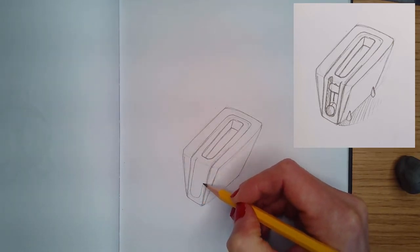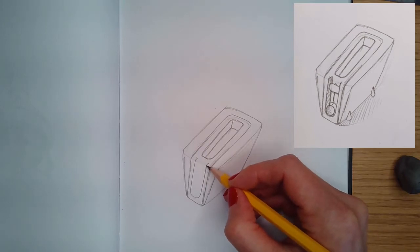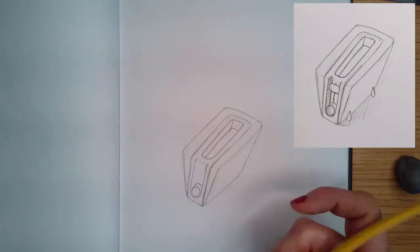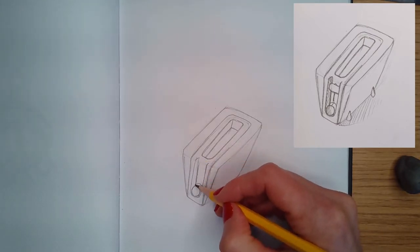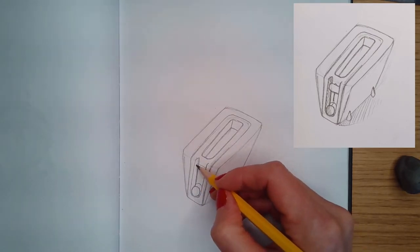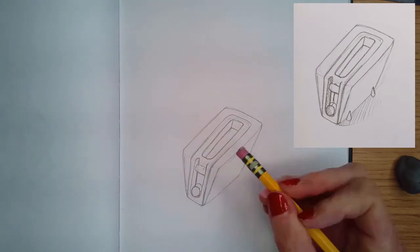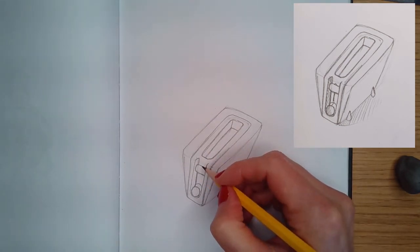And then I'm gonna drop down another rectangle that curves at the bottom and give myself a little dial, make that three-dimensional. And then you're just kind of giving some details. Now you can go in and add lots of value if you want. I just drop in a little bit of shading.